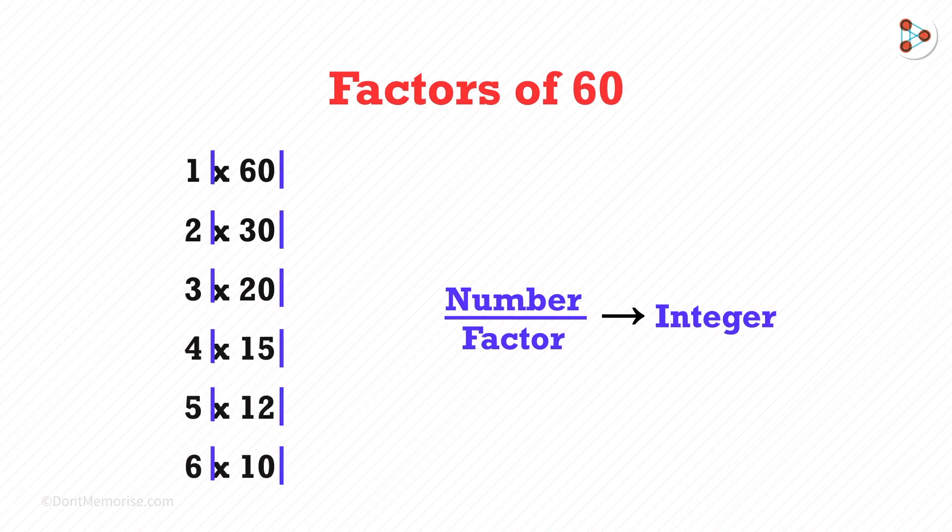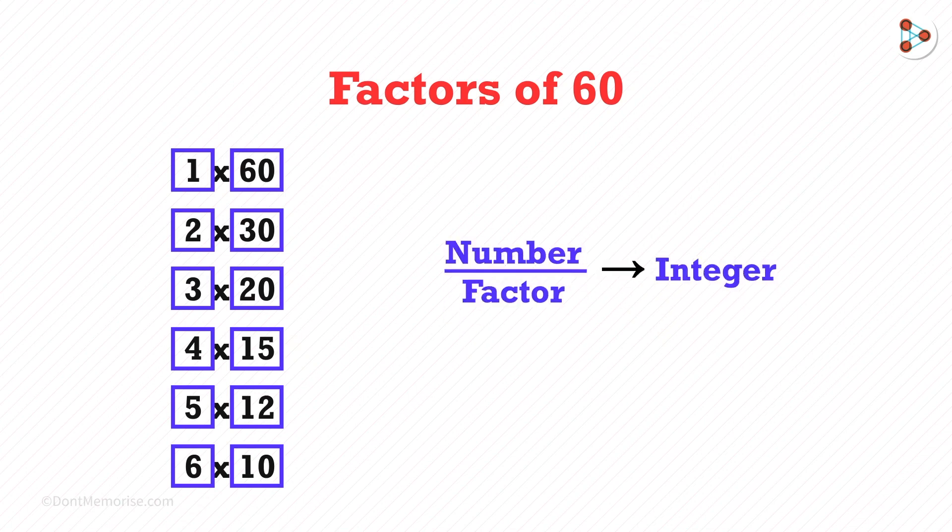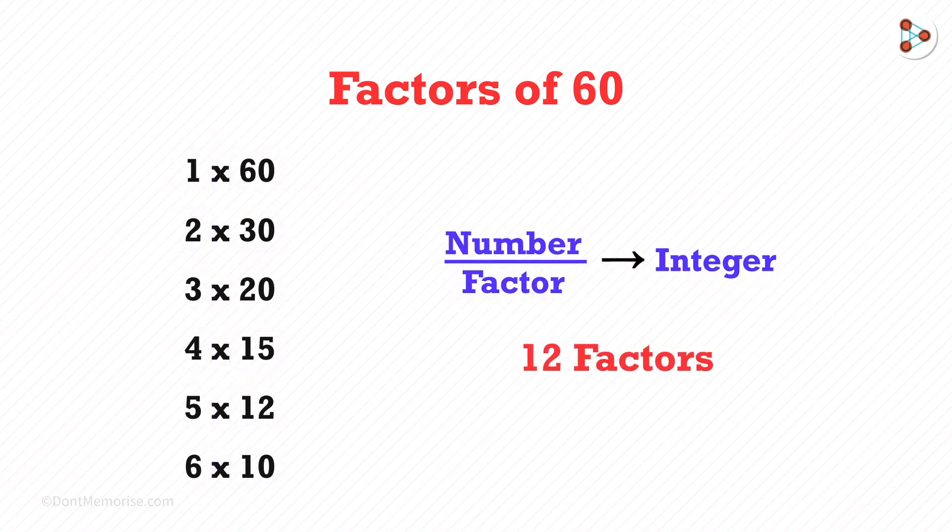So the 12 numbers which you are seeing here are called the factors of 60. So 60 has 12 factors, and if you divide 60 by any factor you get an integer only.